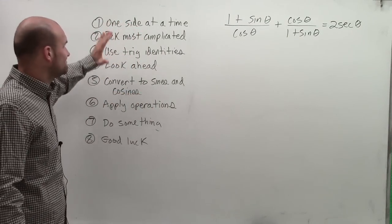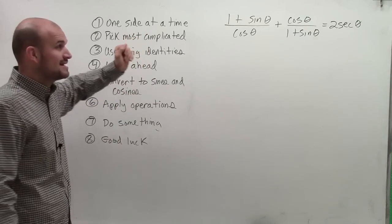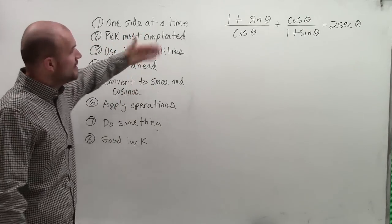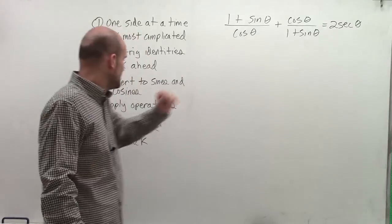Looking ahead, not really going to get to me right now. Converting to sines and cosines, the left side already is converted to sines and cosines. The one thing I could do is try to convert my cosines to secants, but then I'm still left with sines, which I need to get rid of.